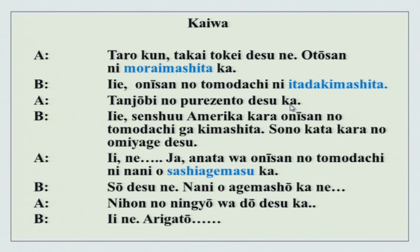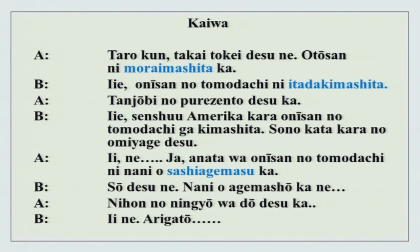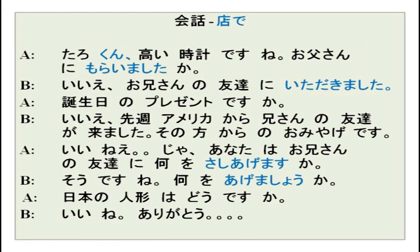Tanjoubi no prezento desu ka? Iie, senshuu Amerika kara o niisan no tomodachi ga kimashita. Sono kata kara no o miyage desu. Sono kata means sono hito - that person. Sono kata kara - from that person - no o miyage desu. Ja, anata wa o niisan no tomodachi ni nani wo sashiagemasu ka - what are you going to give him? Sashiagemasu is used because he is o niisan no tomodachi. Nani wo agemashou ka - what shall I give him? Nihon no ningyo wa dou desu ka or ikaga desu ka. Iie, ne - that is a good idea. Arigatou for the idea.